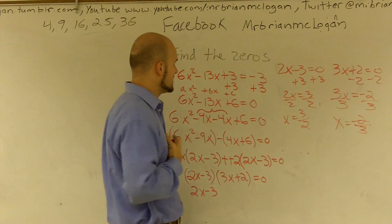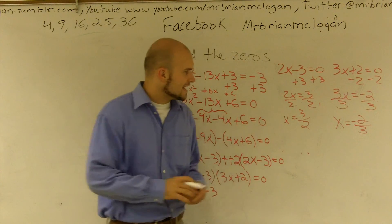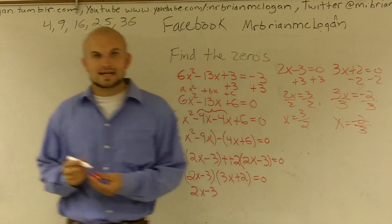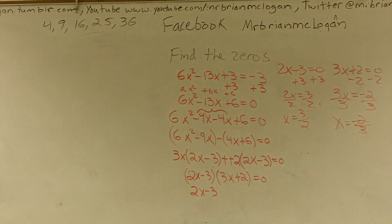So, therefore, the two zeros of my equation are x equals 3 halves and x equals negative 2 thirds. Hope that showed up. Yes, it did. Perfect.